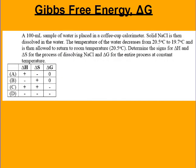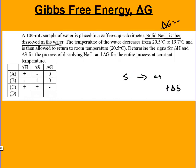Try this one. Solid NaCl is being dissolved in water. Since it dissolves, delta G should be negative. We have a solid dissolving to aqueous, so delta S should be positive. The temperature goes down, which means it's endothermic, so delta H should be positive. C should have been the answer you got.